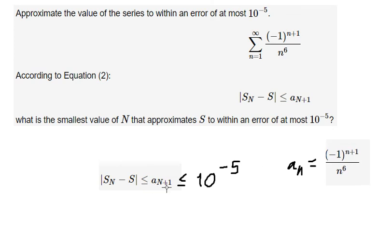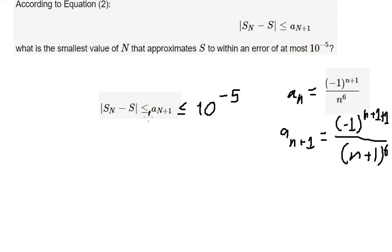Now we have a_{n+1}, so that should be about negative 1 to the n+1 plus 1 over (n+1) to the power of 6. Because this one should be about positive, so we just ignore about this one in here. And now we just have only 1 over (n+1) to the power of 6.